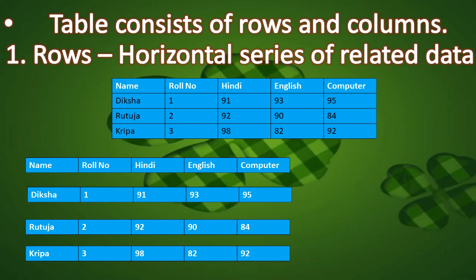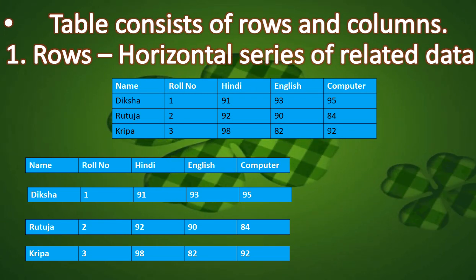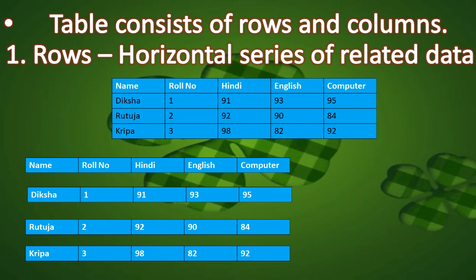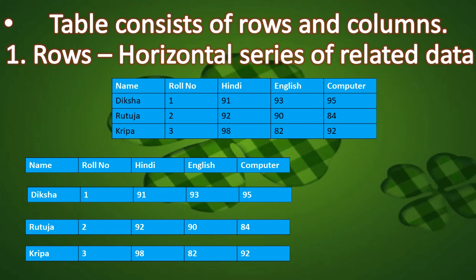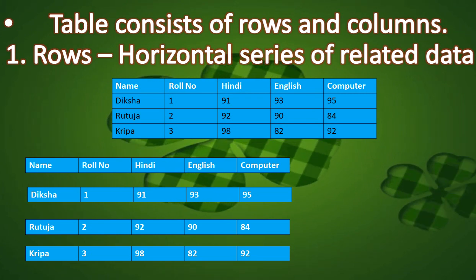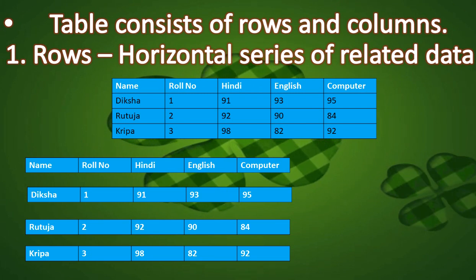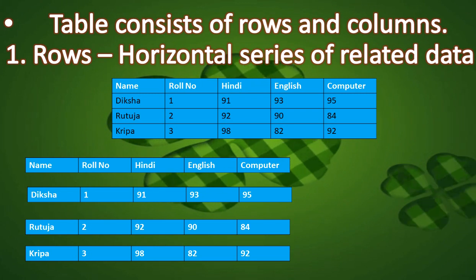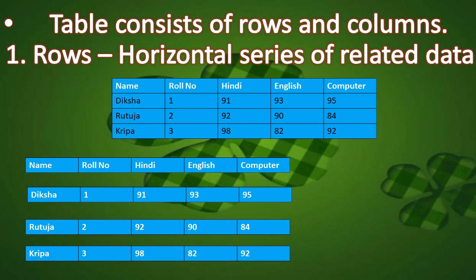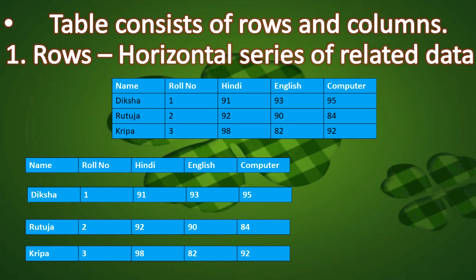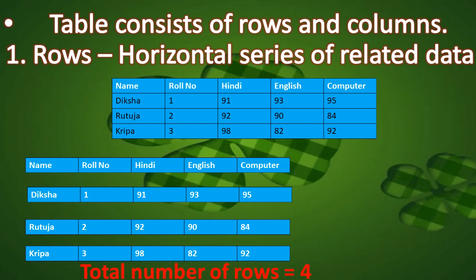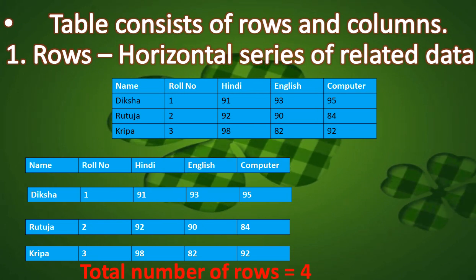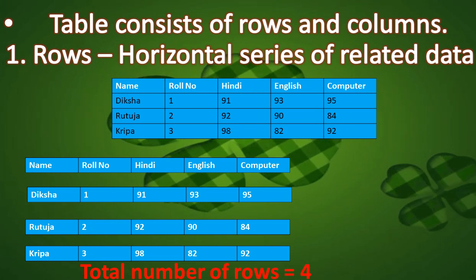What do we mean by related? Related means if in the second row I have typed Diksha, I will type the roll number of Diksha, the Hindi marks of Diksha, English and computer marks of Diksha. So all the data in that row belongs to Diksha. That is why a row is a horizontal series of related data. In this table there are four rows.